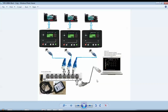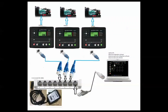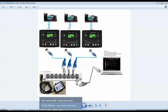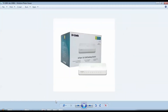For this setup, we need to have Deepsea controllers installed on the generators, a laptop with SCADA Suite software and Deepsea Electronic Configuration Suite software installed. A D-Link desktop switch can be 4-port, 6-port, or 8-port, depending on how many generators you want to include in SCADA.